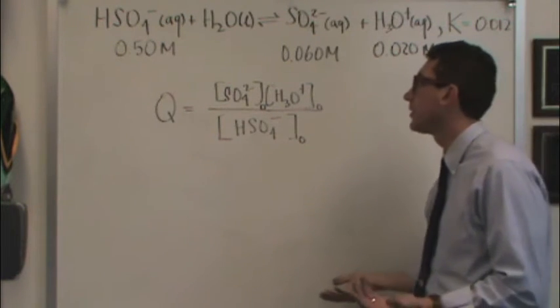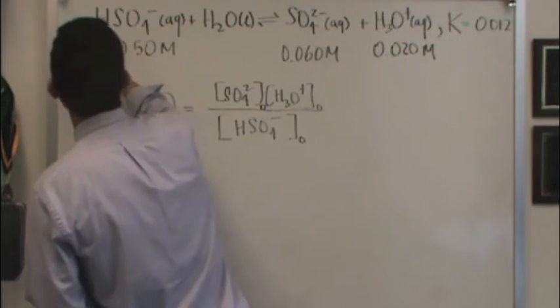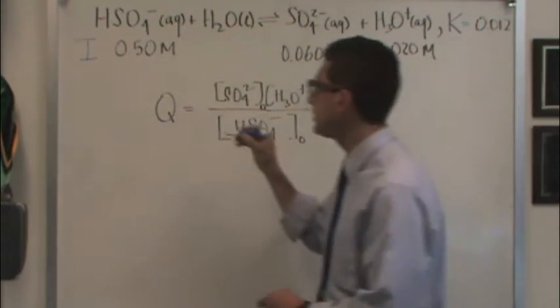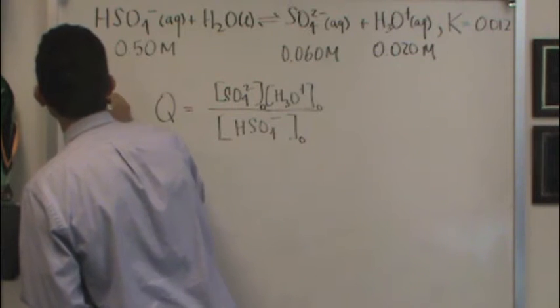So what do we do? Well, we have to set up an ICE table. So we'll go I here, this will be our I line for the known concentrations, then we'll have a C line and an E line.